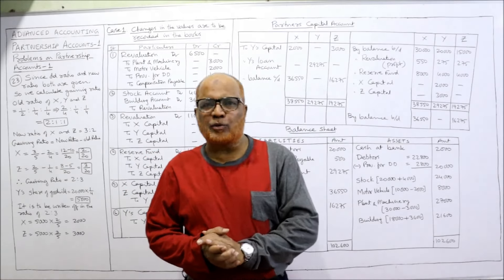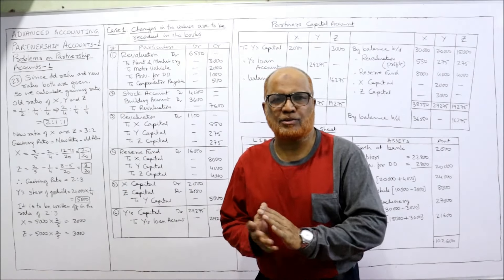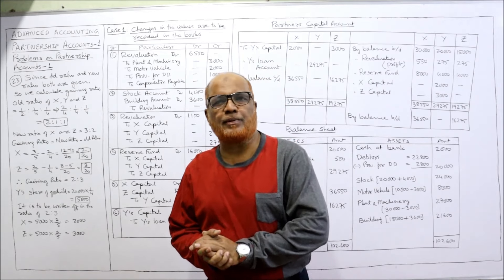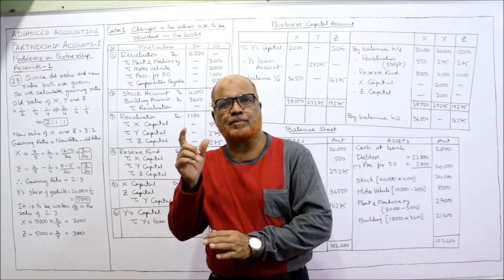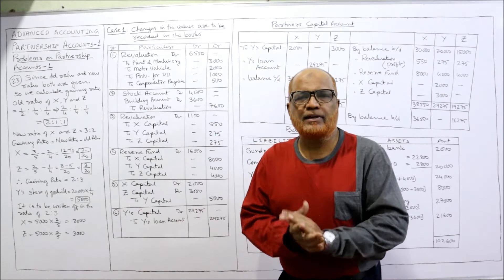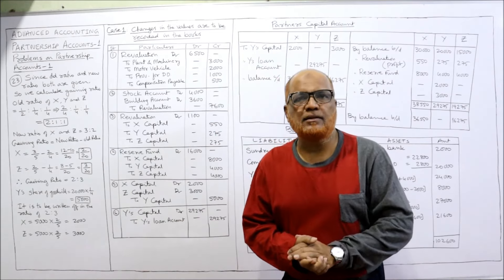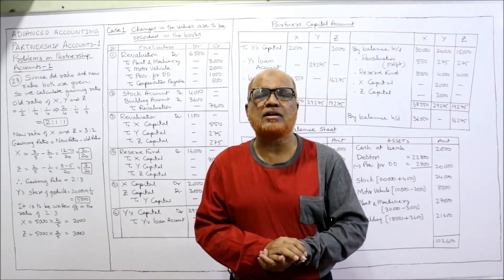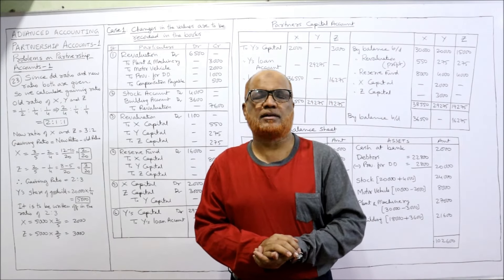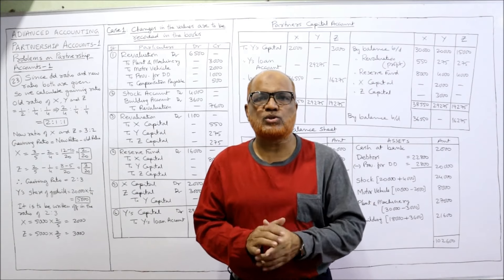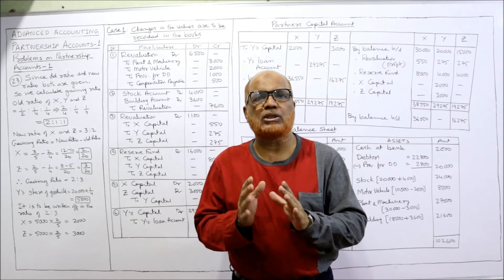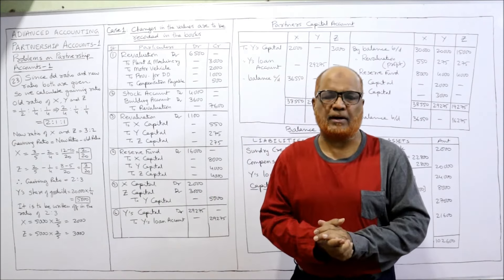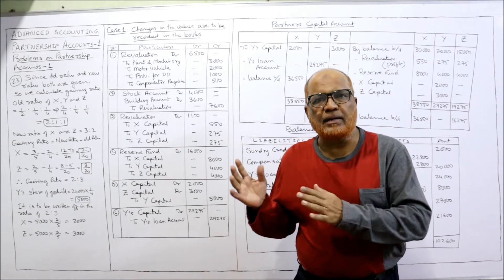Hello viewers, welcome to my channel. I am Hashem Ali Khan. So far 22 problems have been completed on partnership accounts. In this video, the 23rd problem — and this is the last problem on retirement. The next two problems will solve on death of the partner and what adjustments are to be made on the death of a partner.